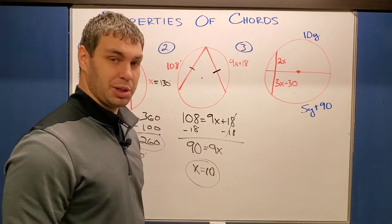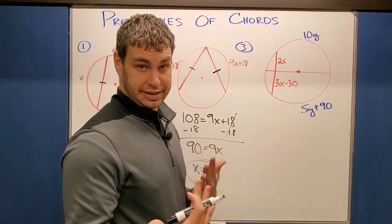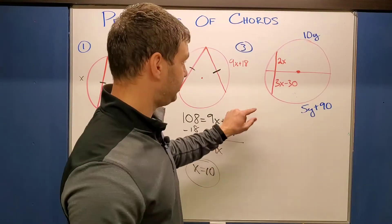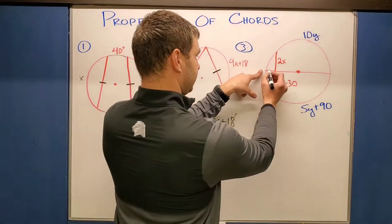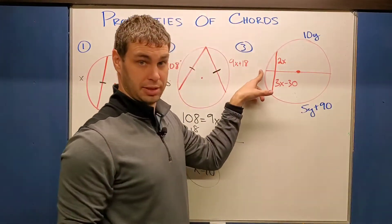All right, last one, number three. This has both X's and Y's. So let's solve for the X's first. And I'm seeing that in this circle, this length right here, that's actually a diameter, our longest chord that's possible inside of a circle.